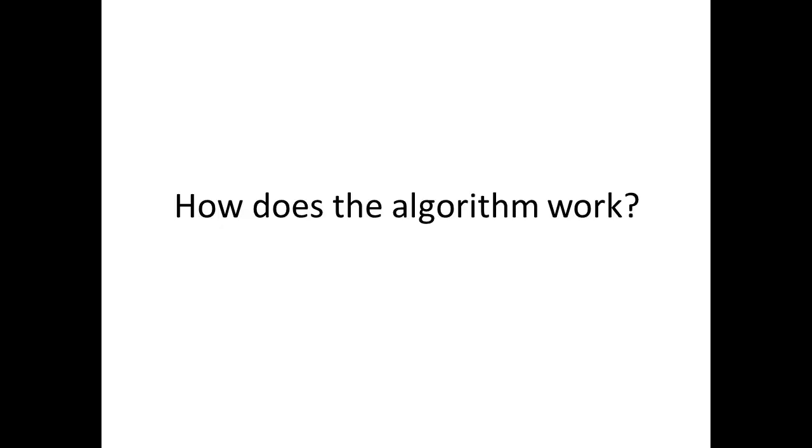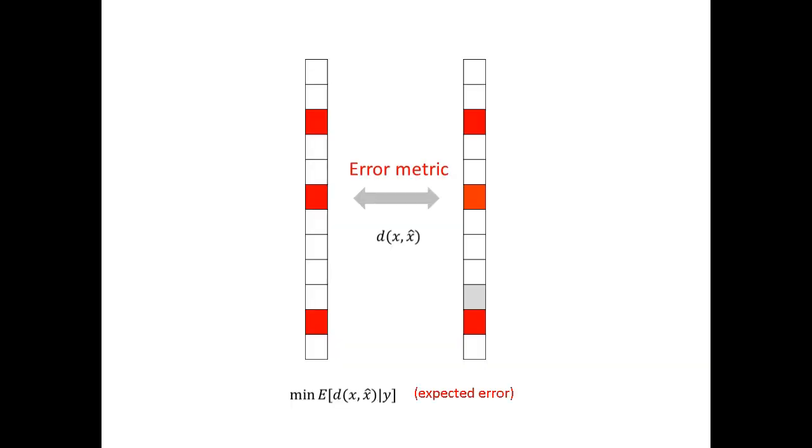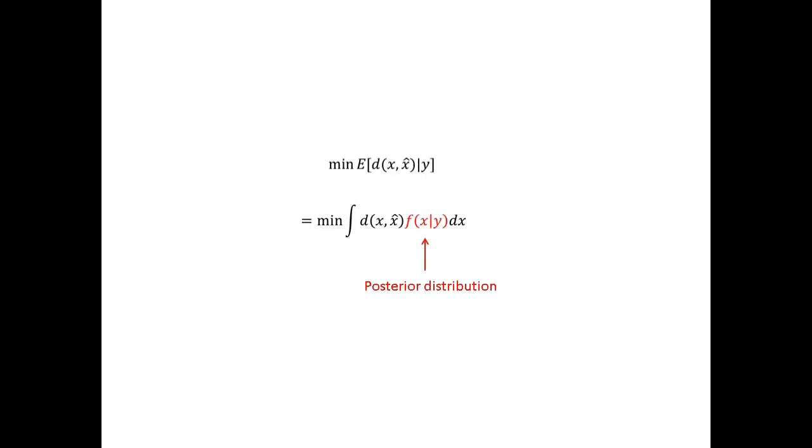How does this algorithm actually work? In explaining how it works, we're going to assume that you have some basic knowledge in statistical signal processing. After the error metric is defined by the user, our reconstructed signal x hat is chosen to minimize the expected error. To compute the expected error, we need to know the posterior distribution, which is the probability of the input x given the observations y.